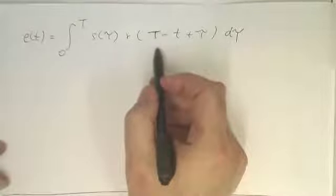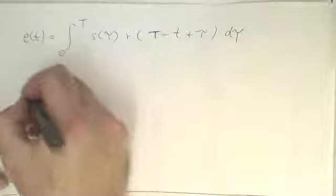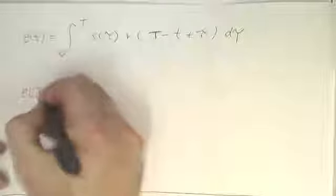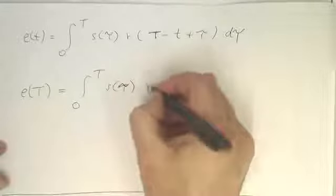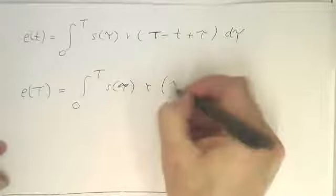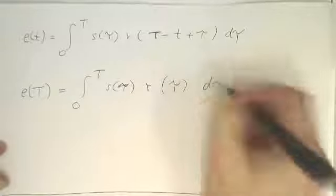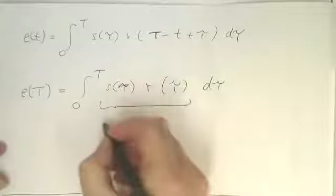So now in order to get rid of this T here, we could just evaluate this E(t) here at E of capital T. So if we do that, then we have here S(tau). And then this multiplied by just R(tau) d tau. And this is here a correlation operation.